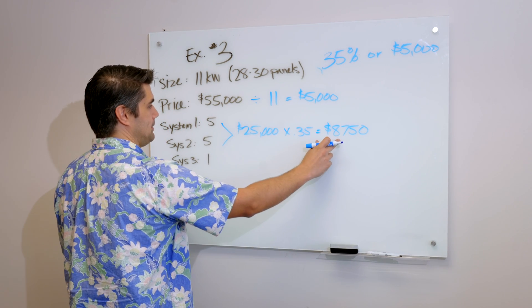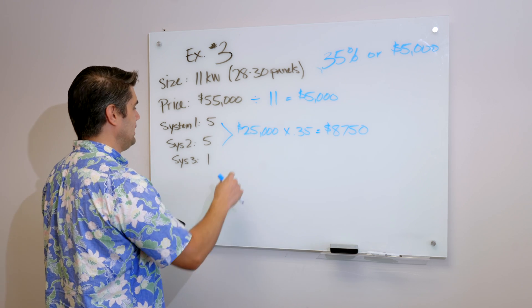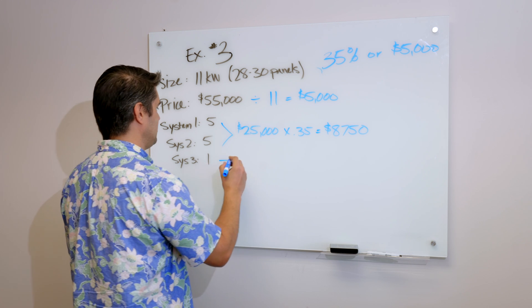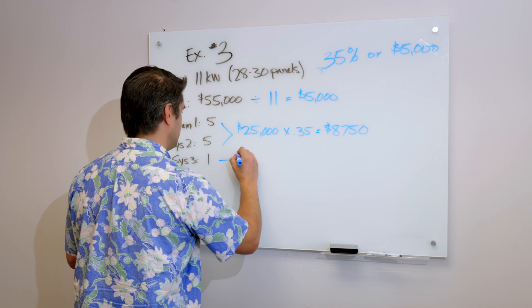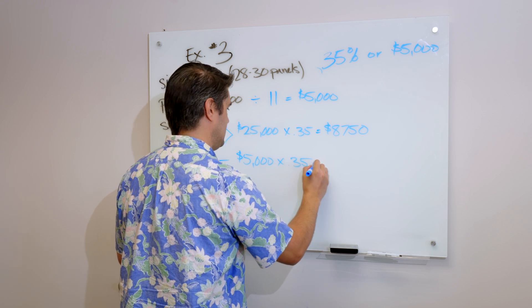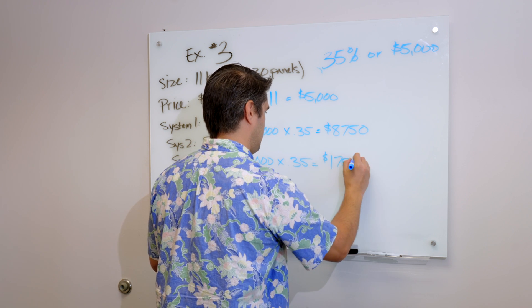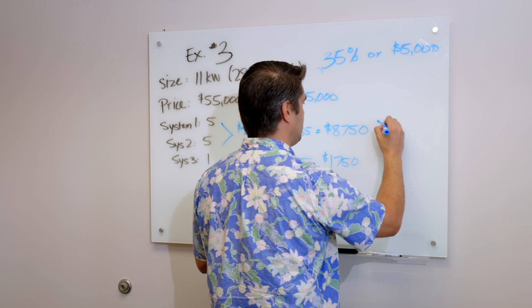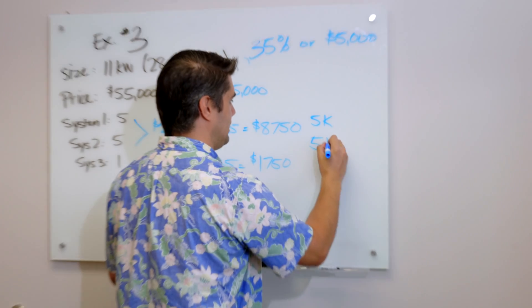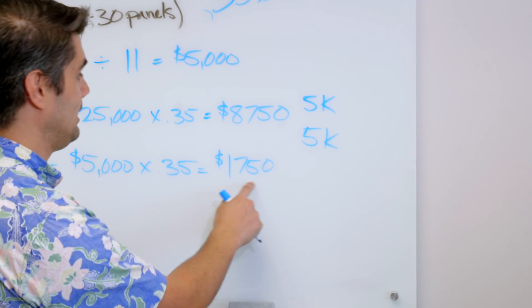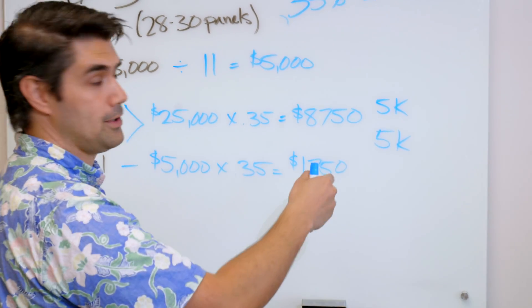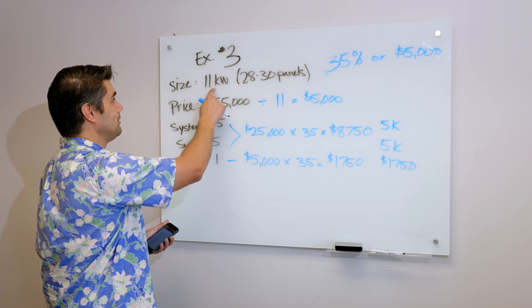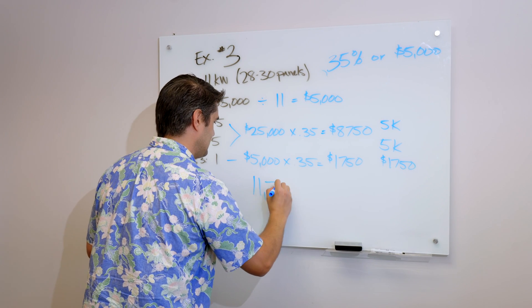So now I'm going to do the same thing. So I know system 1 and system 2 are going to be the same. System 1 and system 2, that's 5 times $5,000. So it's $25,000. And then if I do my tax credit on that, $25,000 times .35, my 35%, then I get $8,750. For system 3, this would be 1 times $5,000. That's $5,000. And then let's take 35% of that, which equals $1,750. I can't do $8,750 because that's higher than $5,000. So I'm going to cap it at 5K. System 2, cap that at 5K. System 3, it's less than $5,000. So I can take the full 35% at $1,750.